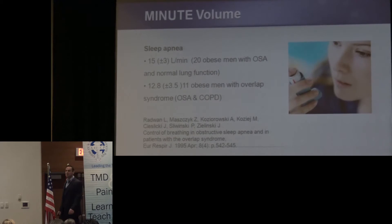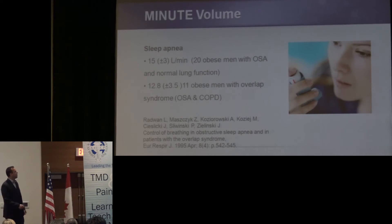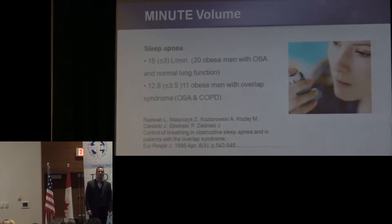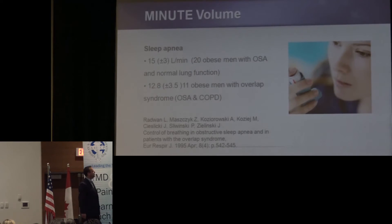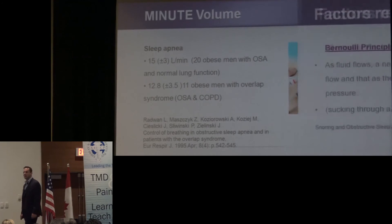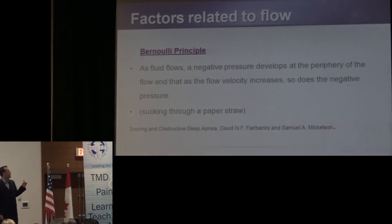Minute volume with obstructive sleep apnea is very seldom studied. In one paper, they looked at 20 obese men with OSA and normal lung function, and they were found to be breathing 15 liters of air per minute — minute volume 15 liters, when normal is four to six. They're breathing two to three times more. In the same paper, another group measured 12.8 liters — these people had overlap syndrome, both OSA and COPD — but they're still breathing excessively. When we look at OSA, we have to consider flow.